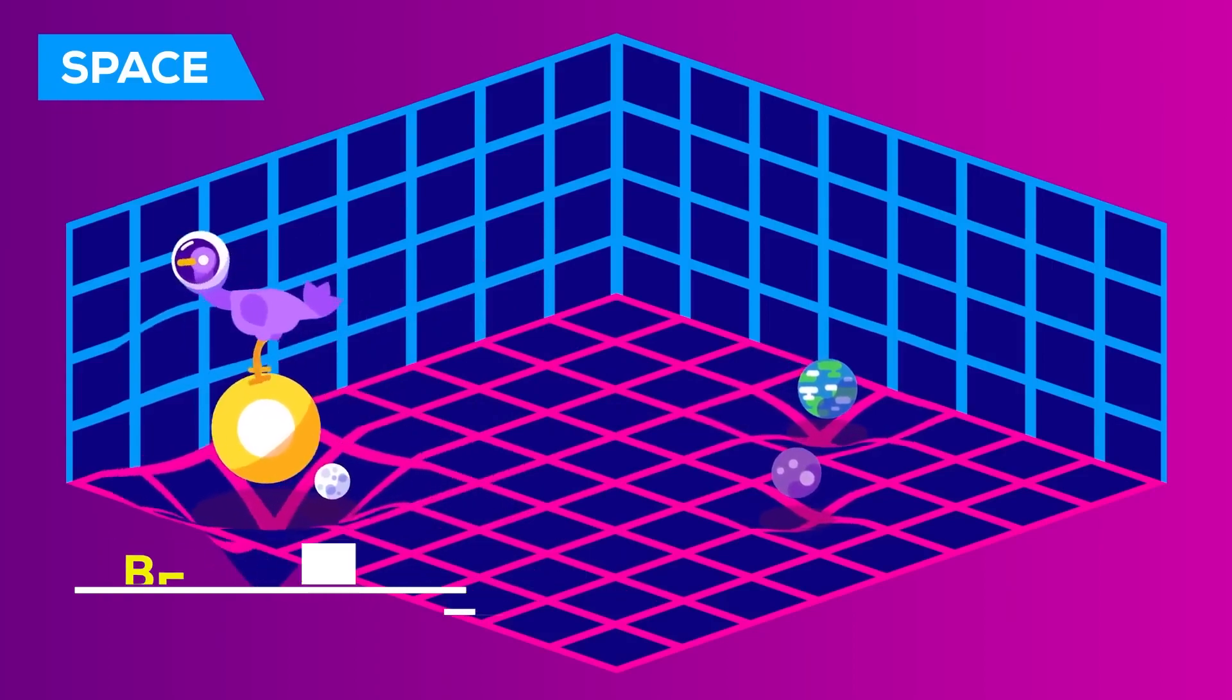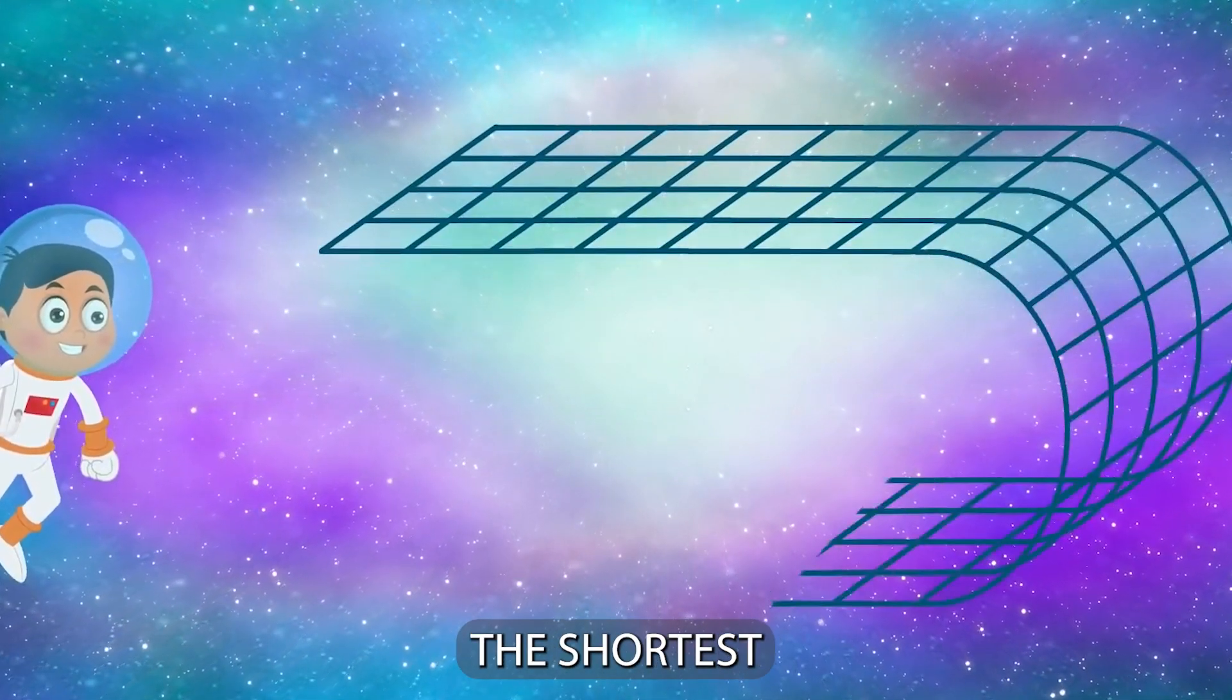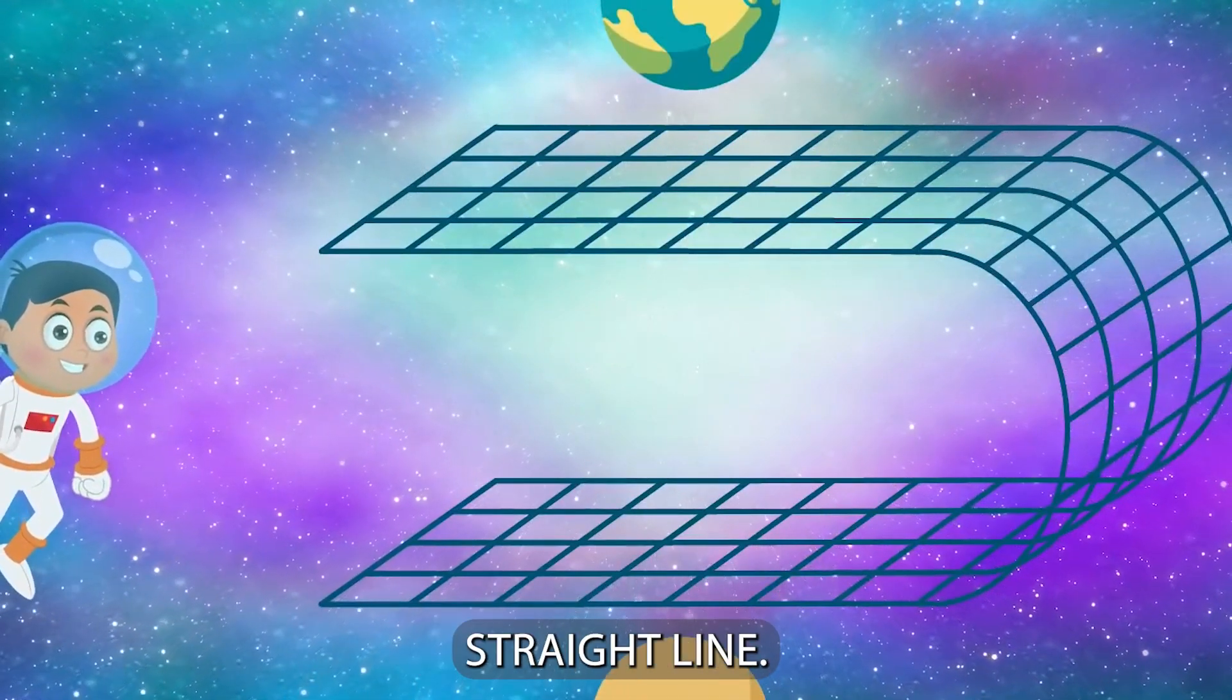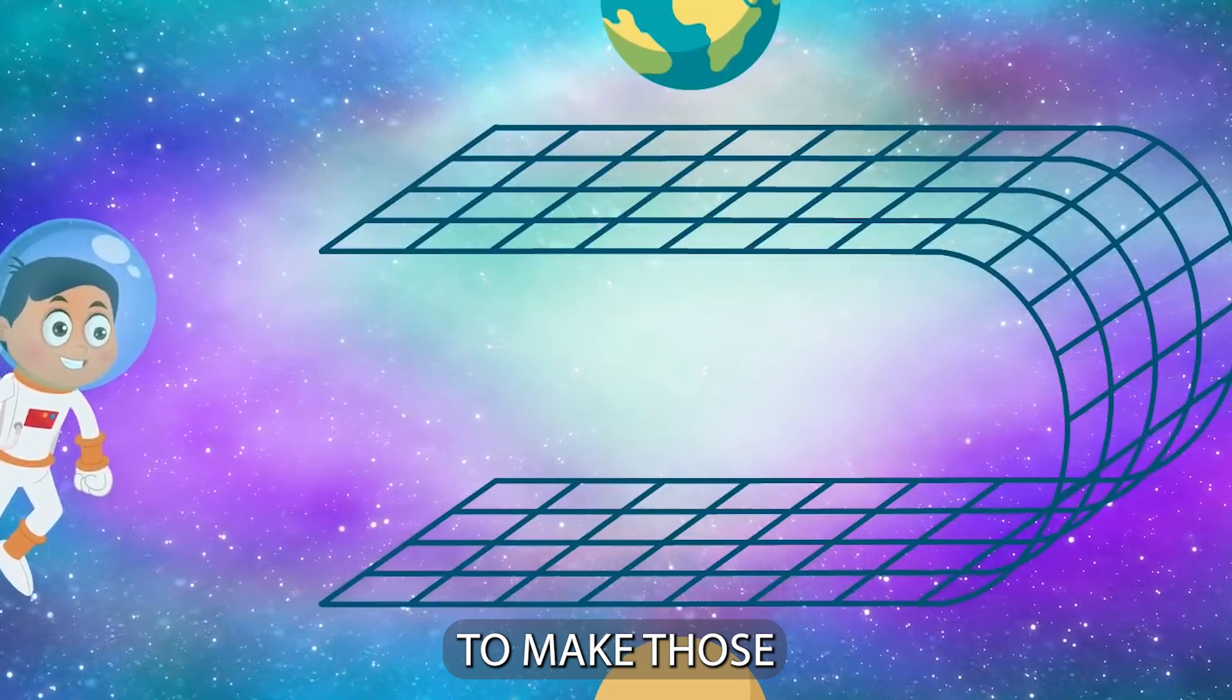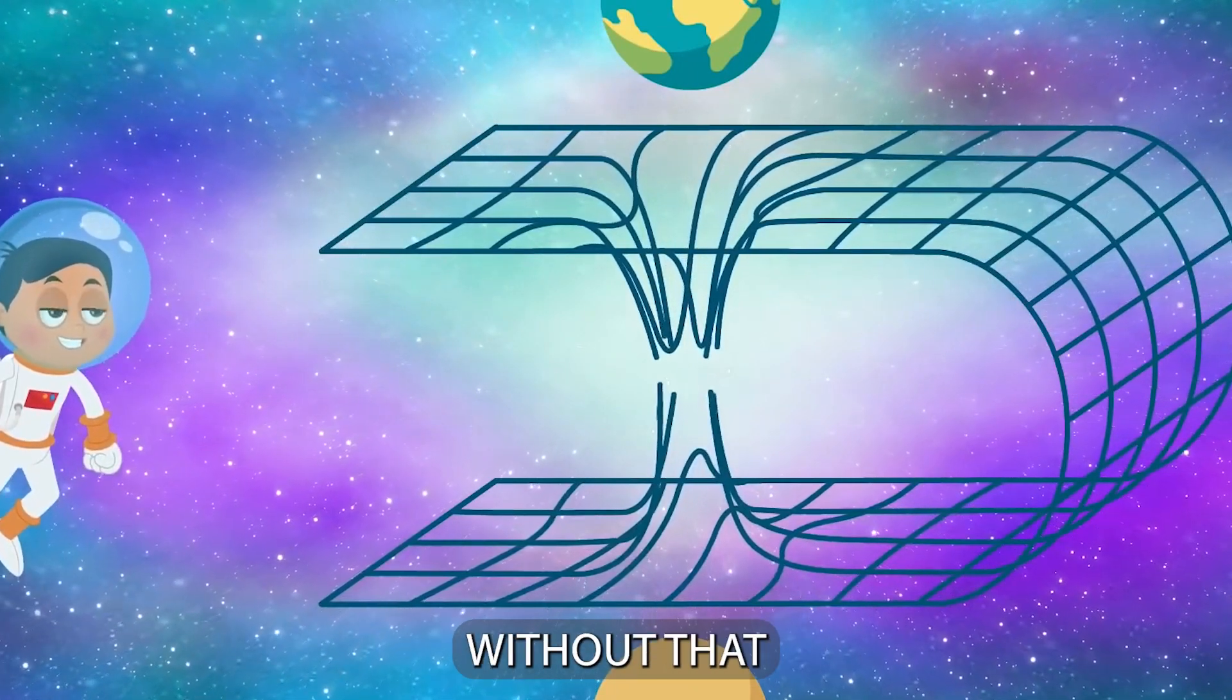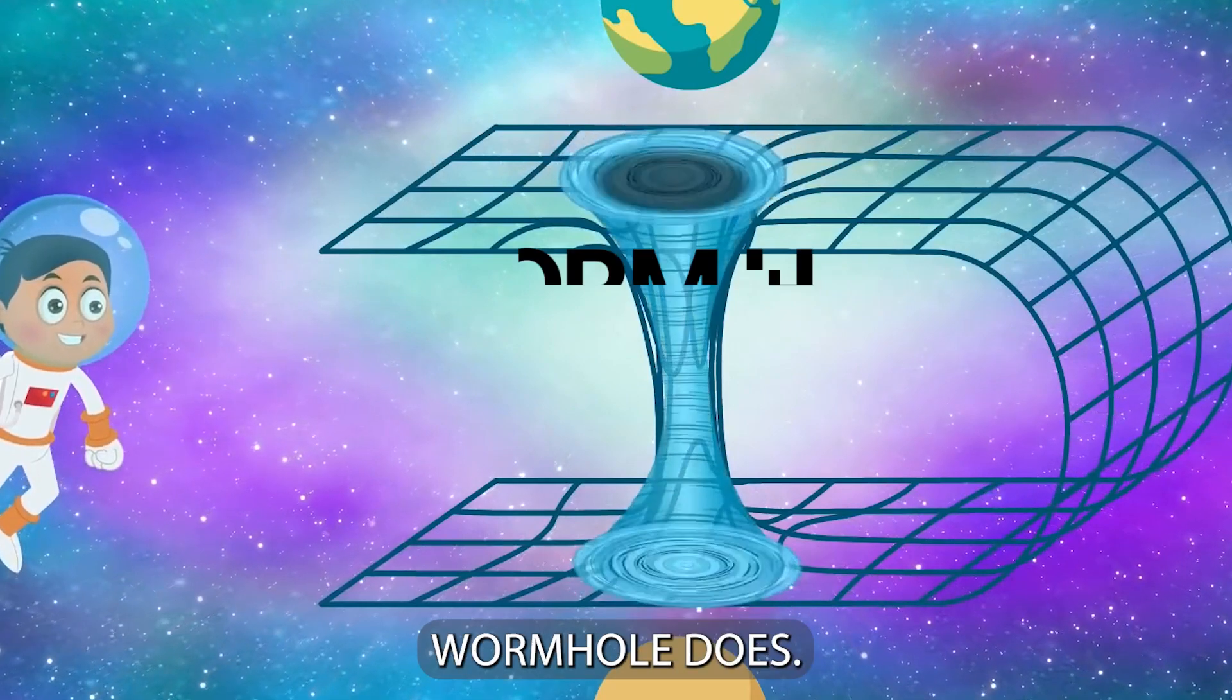Imagine a paper with two points on each end. The shortest distance possible between these two points will be a straight line, but if we fold the paper to make those two points overlap, we can instantly get to other point without that straight line. That's what wormhole does.